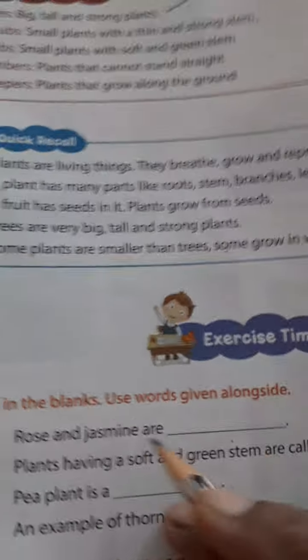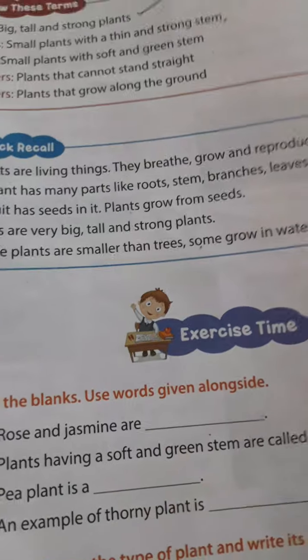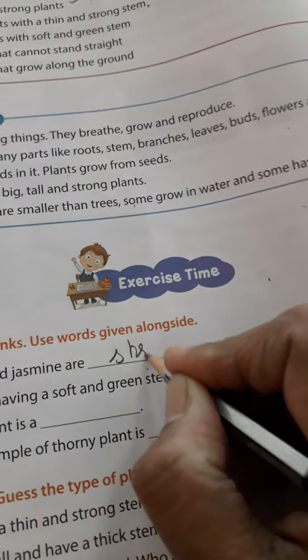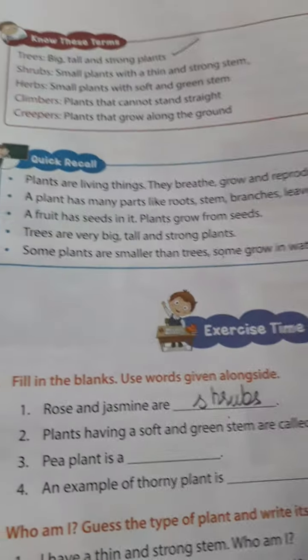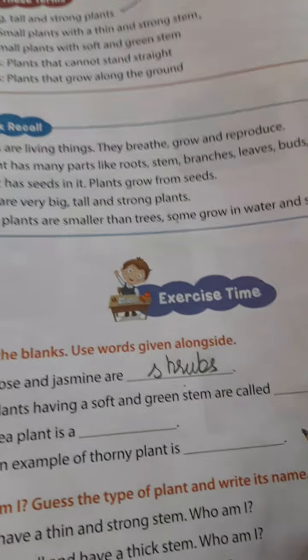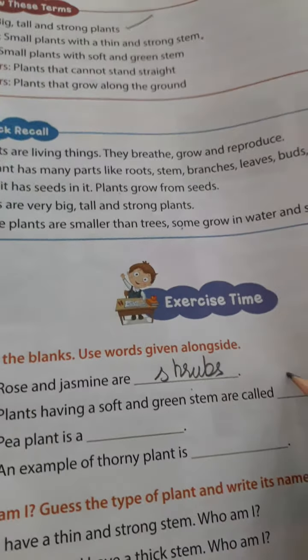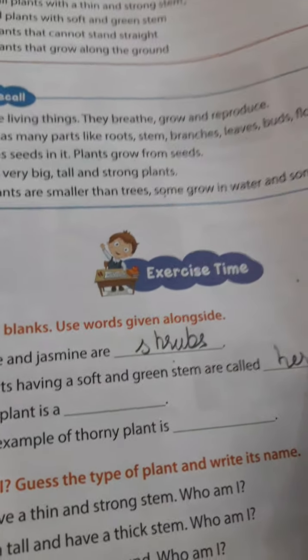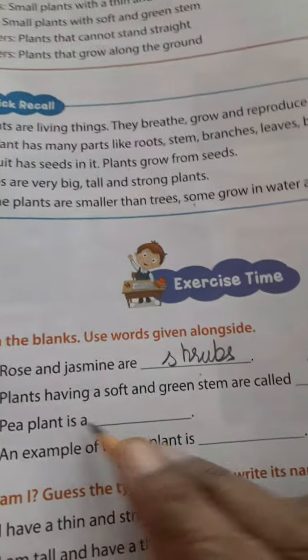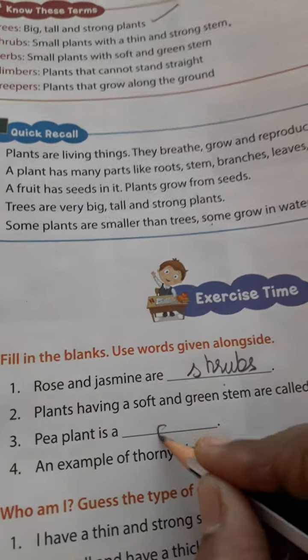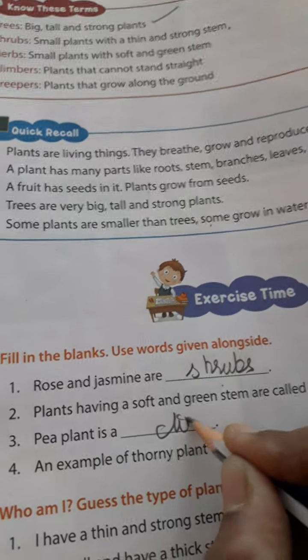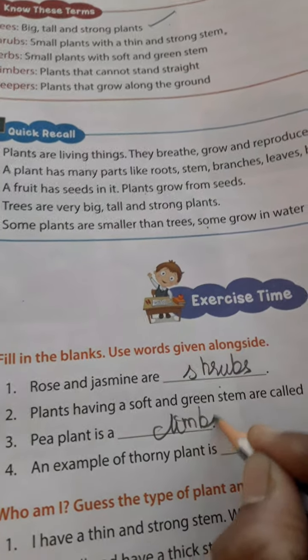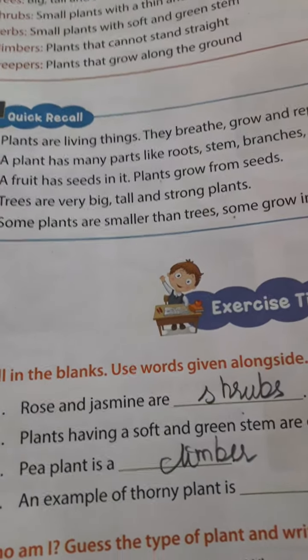Now let us do this exercise. Rose and jasmine are shrubs — S-H-R-U-B-S. Plants having a soft and green stem are called herbs. The pea plant is a climber. An example of...